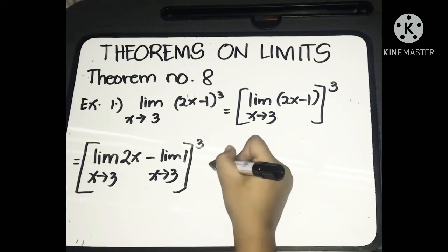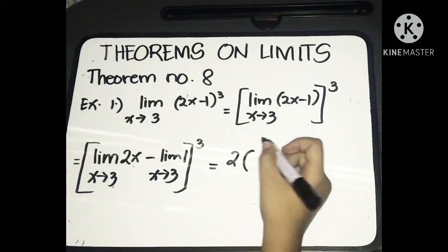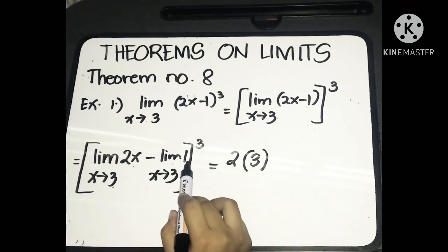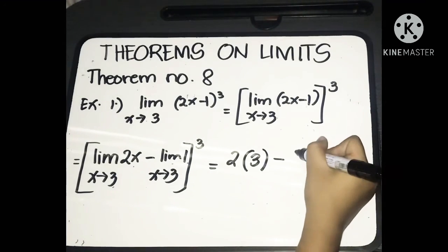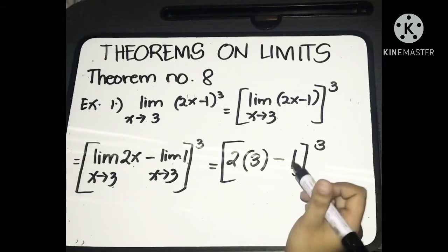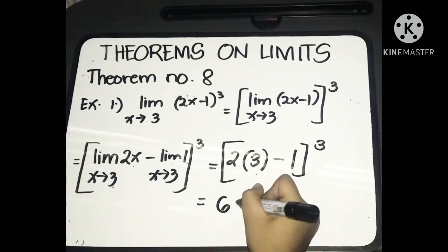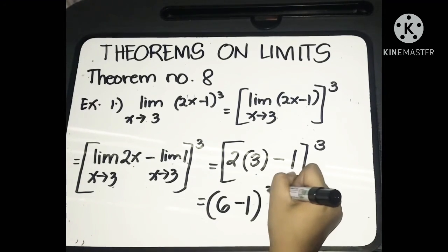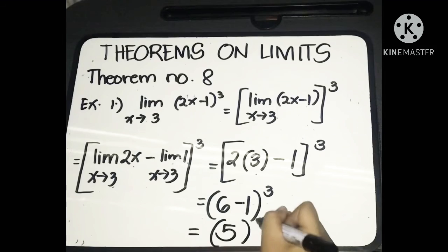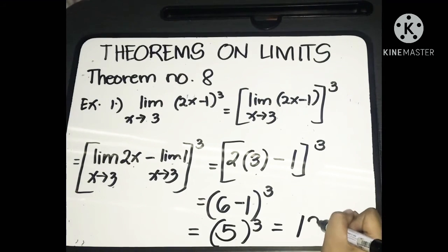Simplifying: the limit of 2x as x approaches 3 gives 2 times the limit of x as x approaches 3, which equals 3, so that's 2 times 3 equals 6. Minus the limit of constant 1 as x approaches 3, which equals 1. So we have (6 minus 1) raised to 3, which is 5 raised to 3, equal to 5 times 5 times 5, or 125. That is the final answer.